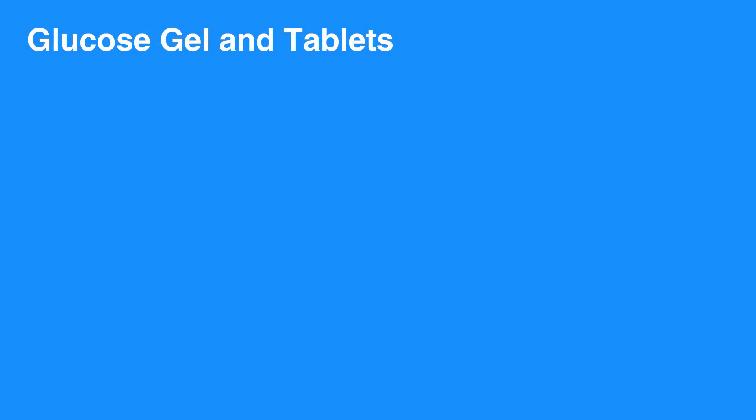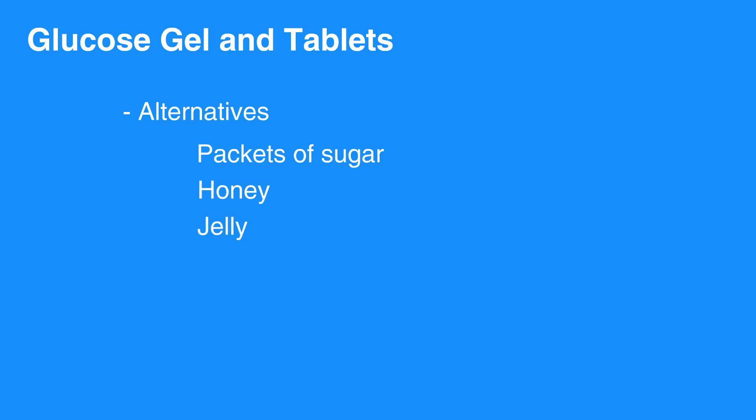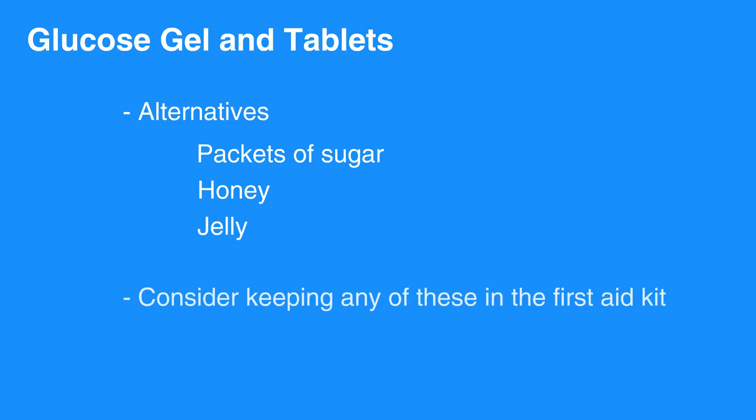Glucose gel and tablets are available and a good way to quickly increase blood sugar. Alternatives to gels and tablets include packets of sugar, honey, or jelly from restaurants, which may be readily available. Consider keeping any of these in the first aid kit.